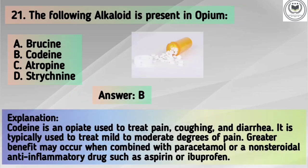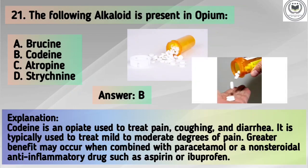Explanation: Codeine is an opiate used to treat pain, coughing, and diarrhea. It is typically used to treat mild to moderate degrees of pain. Greater benefit may occur when combined with paracetamol or a non-steroidal anti-inflammatory drug such as aspirin or ibuprofen.